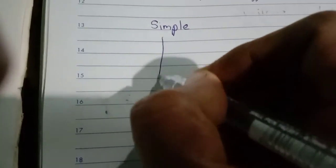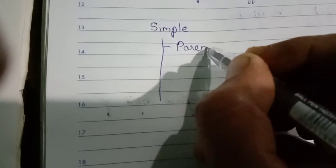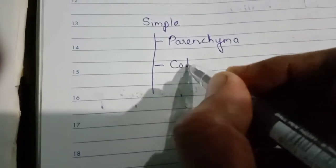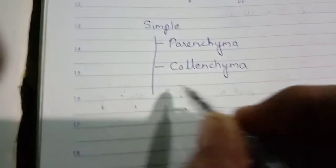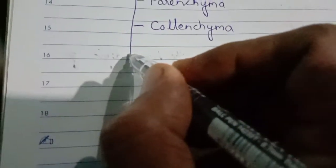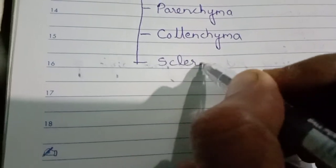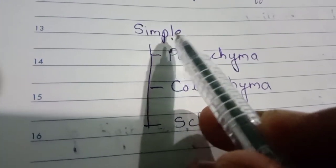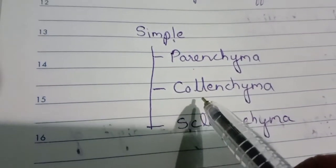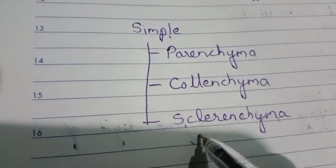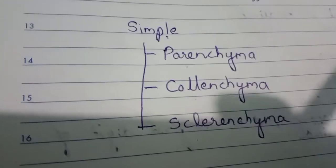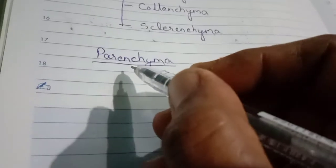Simple tissue is further divided into three types: first, parenchyma; second, collenchyma; and third, sclerenchyma. Simple tissue, as I told you, is made up of one type of cells with similar structure.